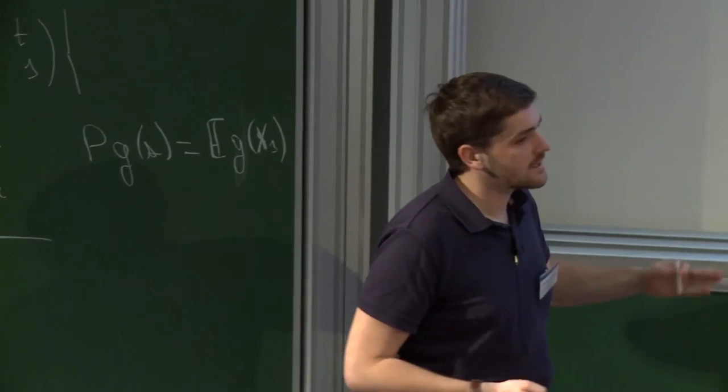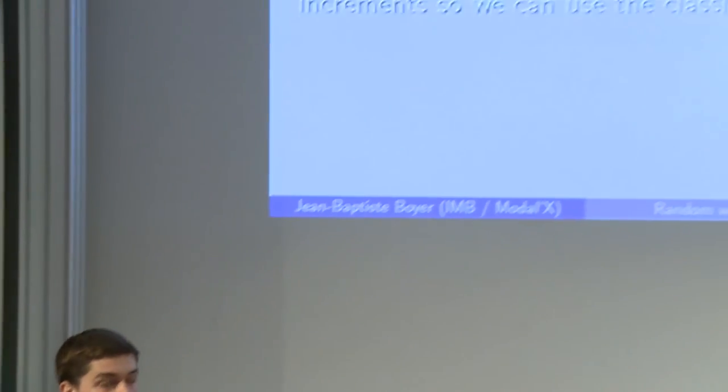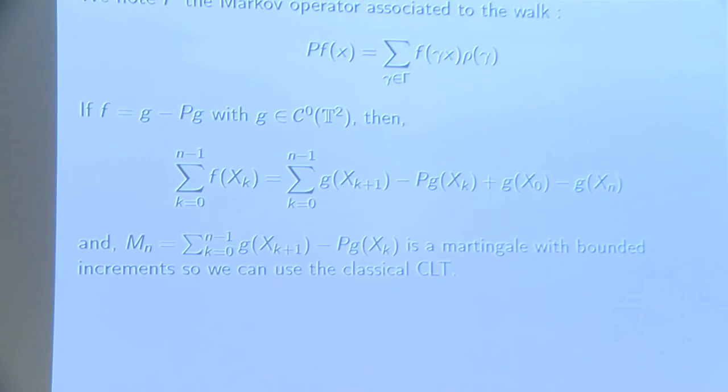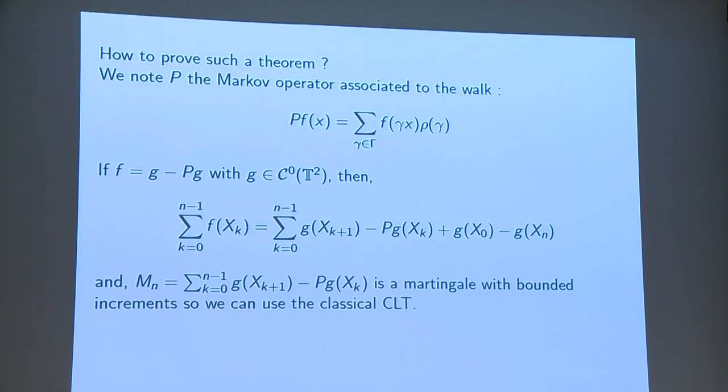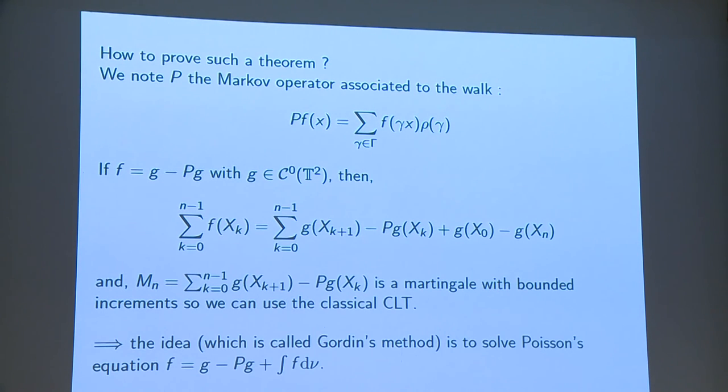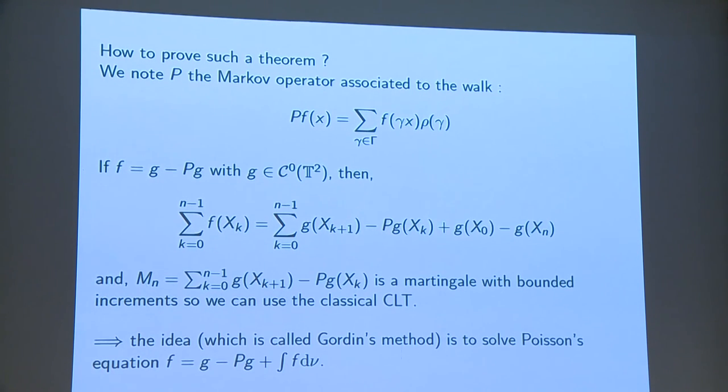And if I have a function that varies like this, g minus pg, then I have martingales and I can use the central limit theorem for martingales with bounded increments if g is bounded. So the idea is to solve this equation, it's called Gordon's method.